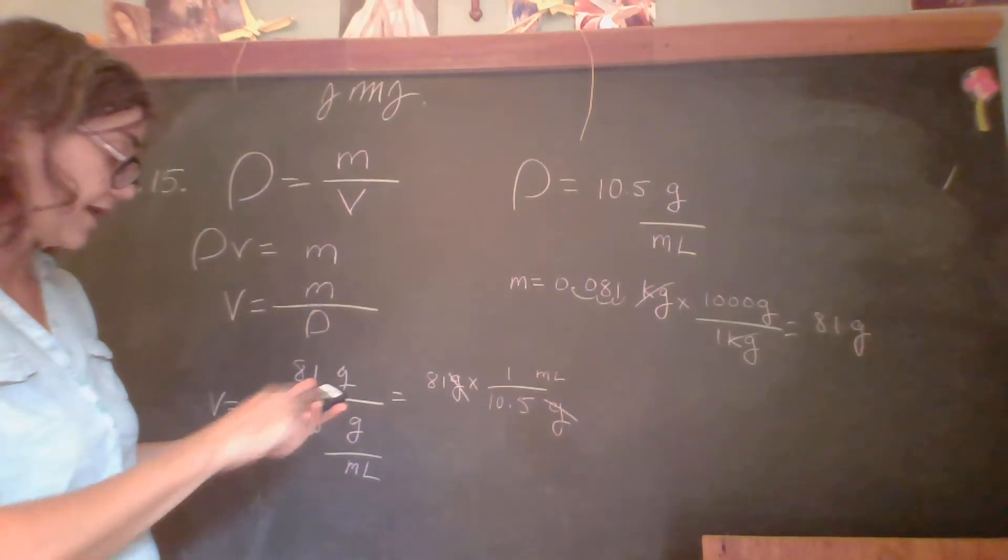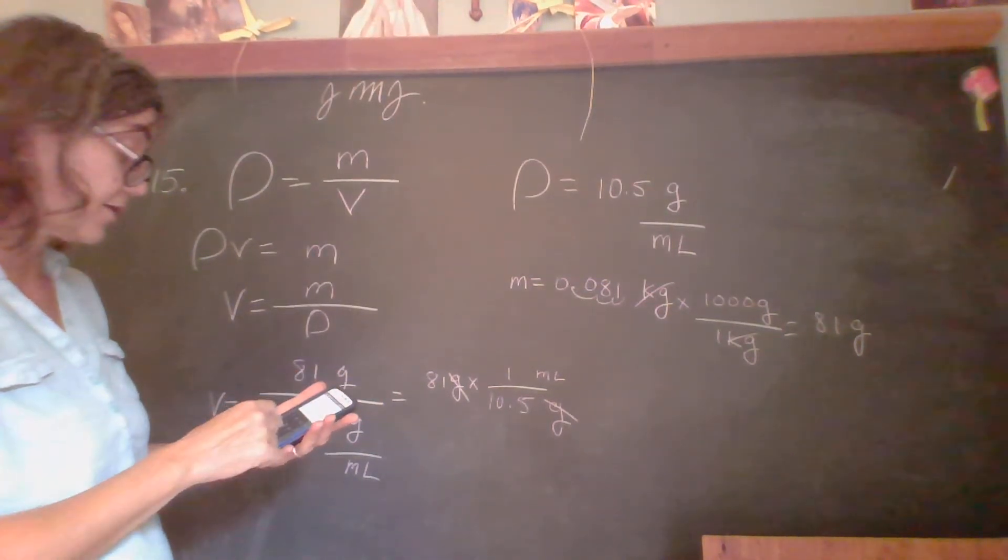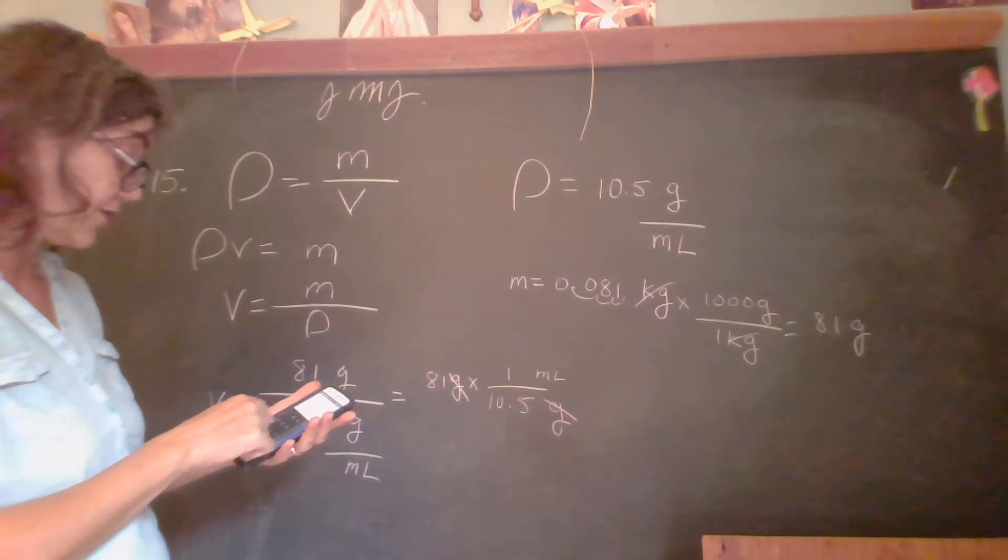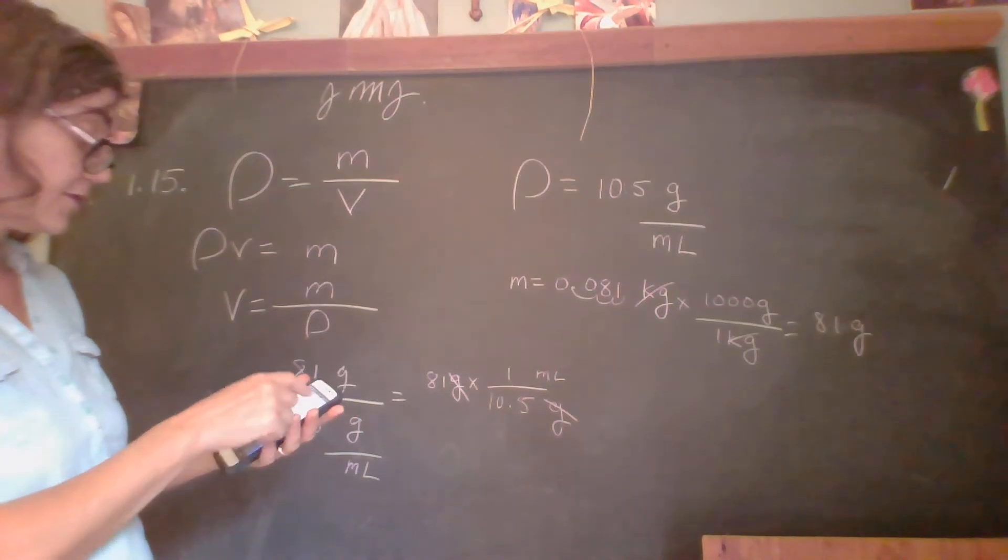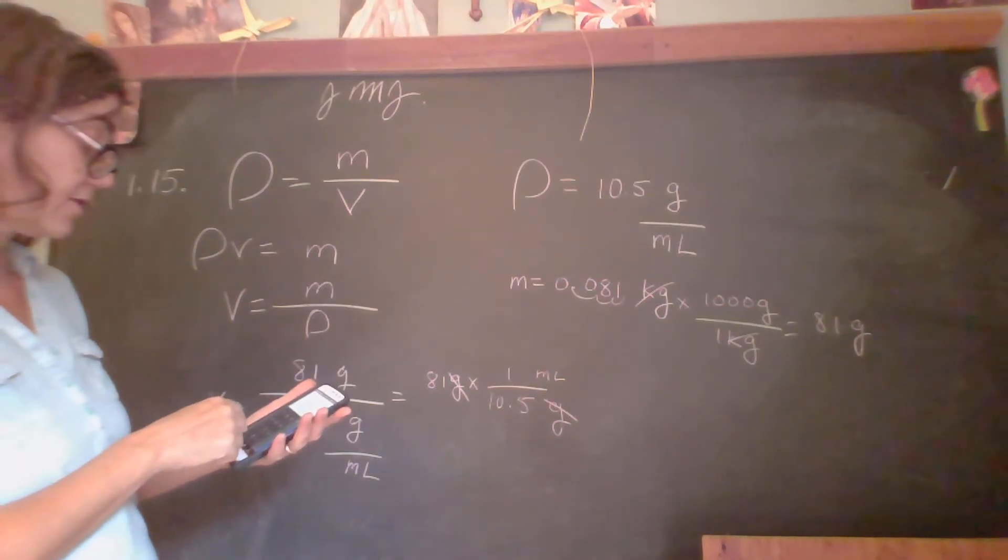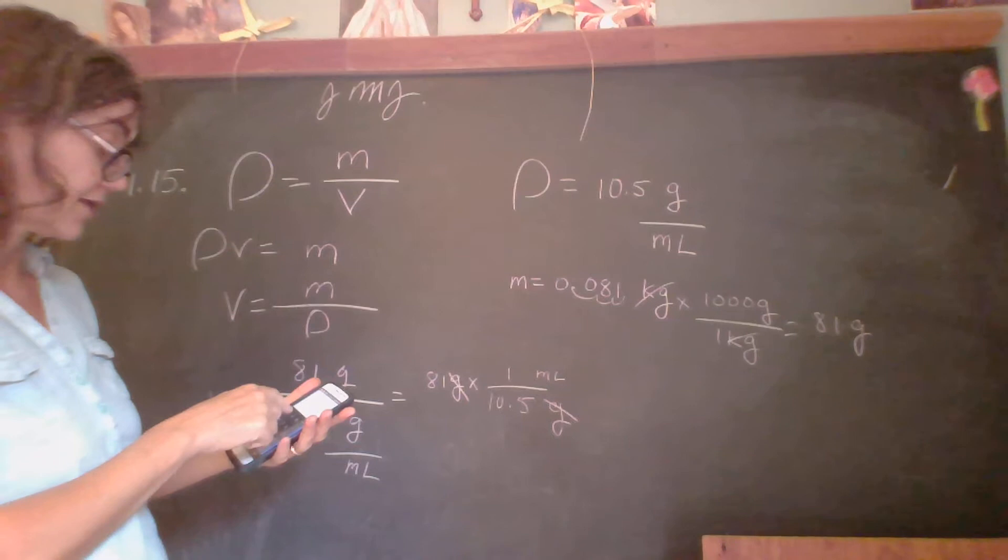You can just remember that these will cancel, or you can write it out like this. So I'm going to divide 81 by 10.5. As you can see, it's going to be somewhere around 8. Let's use our calculator. 81 divided by 10.5.